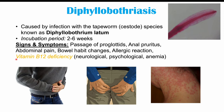Vitamin B12 deficiency can lead to neurological, psychological, and hematological signs and symptoms. Neurologically, there can be symmetric paresthesias — numbness and tingling on both sides of the body, especially the extremities. Psychological findings can include depression and cognitive issues like reduced memory or attention. Anemia from B12 deficiency can cause pallor, fatigue, shortness of breath, and many others.